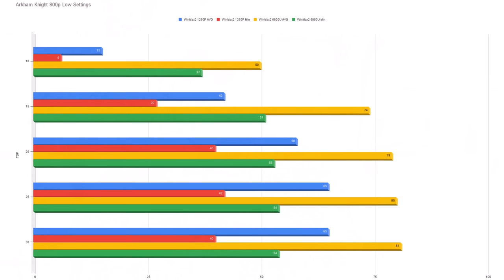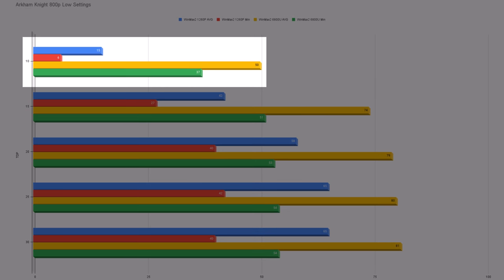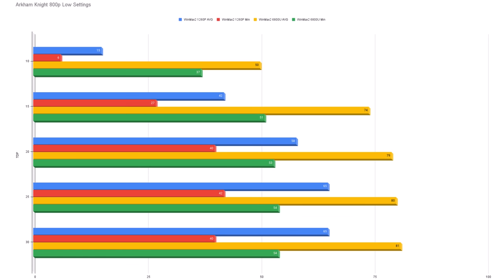Now for the meat and potatoes. This is Arkham Knight running at 800p on the low settings preset, and it's pretty much just domination by the AMD 6800U — this is going to be a recurring theme. The 6800U just destroys the 1260p. Intel came into this fight empty-handed, and it'll be even worse next year when the AMD 7800U arrives with Zen 4 and RDNA 3. At 12W TDP — about 20W total system power — you can run Batman Arkham Knight for around three hours on the GPD Win Max 2's 67Wh battery.